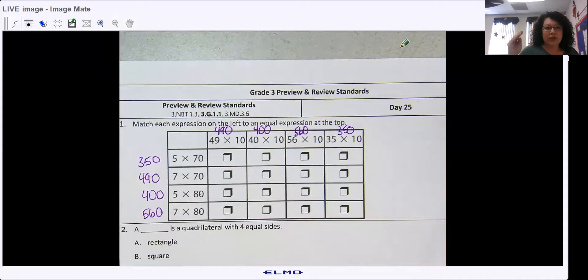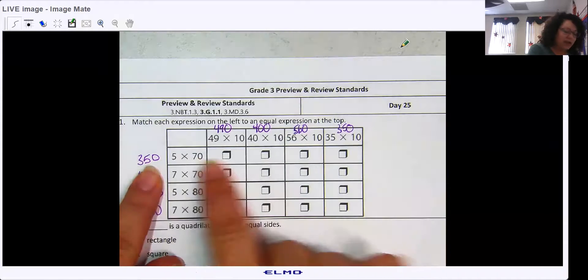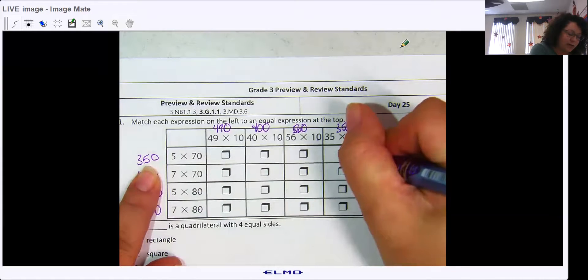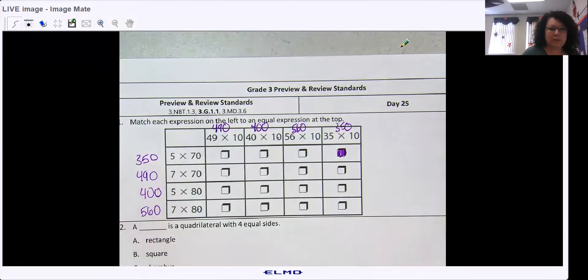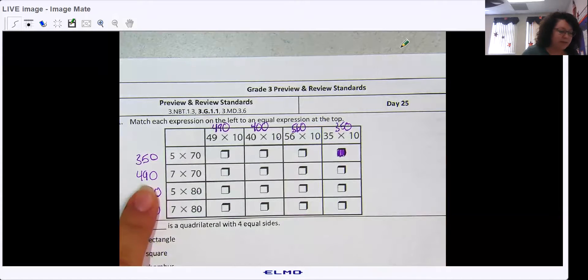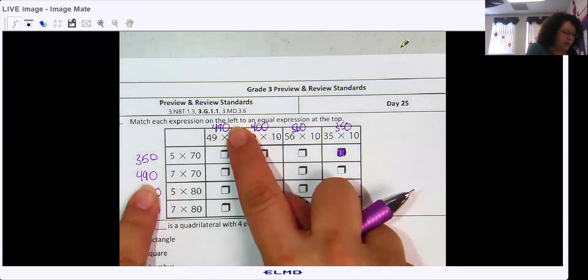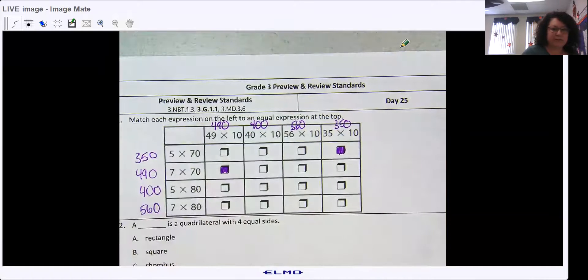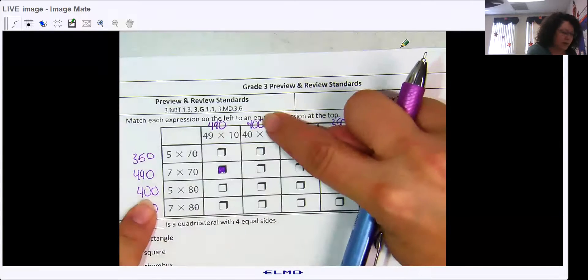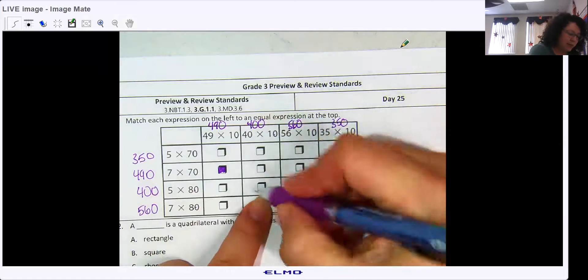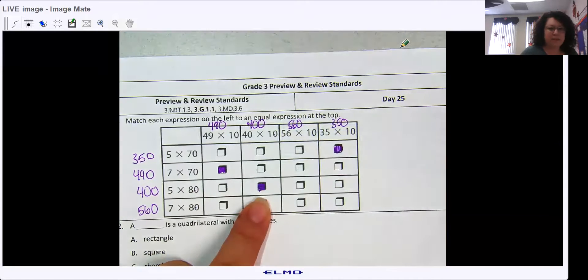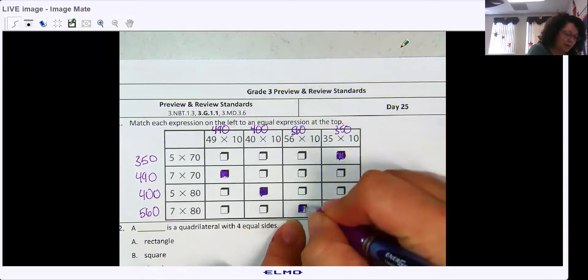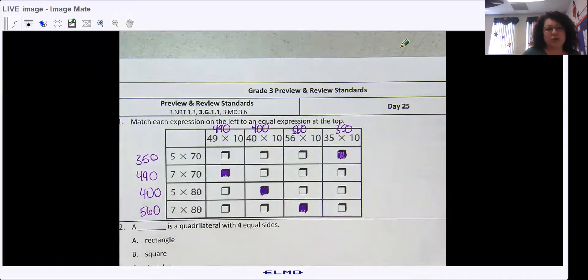So now I have to match 350 to the 350, and that would be this box over here. So I would go all the way over and box in here. 490 is right here, so then I would match them up right there. 400, match them up right there. And 560, match them up right there. Okay, so that's how those charts work.